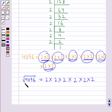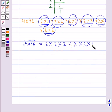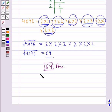So square root of 4096 is equal to 2 multiplied to itself 6 times. And this is equal to 64. So square root of 4096 is equal to 64. Hence our final answer is 64. So hope you enjoyed this session. Have a good day.